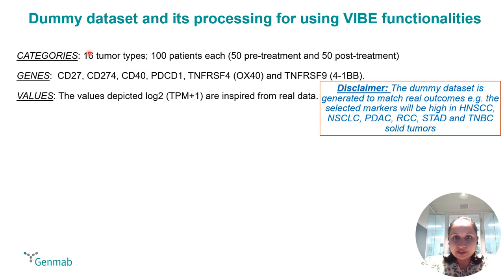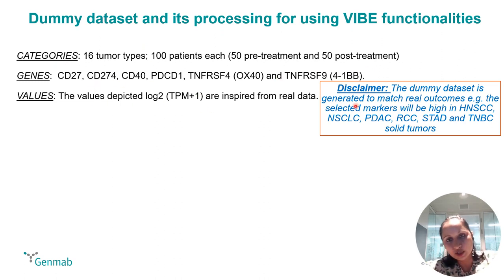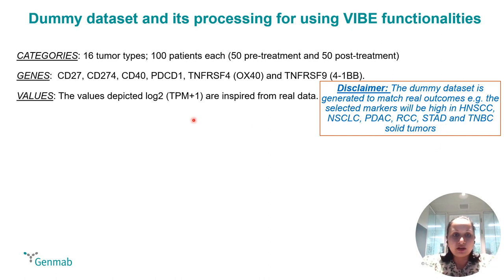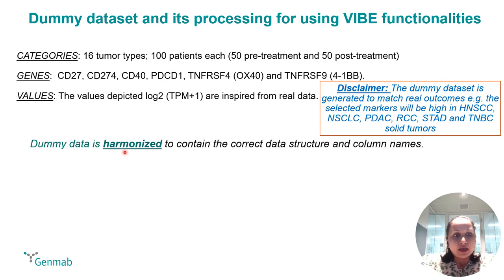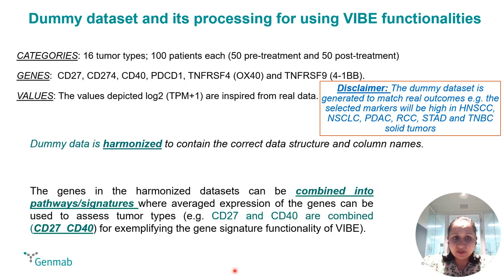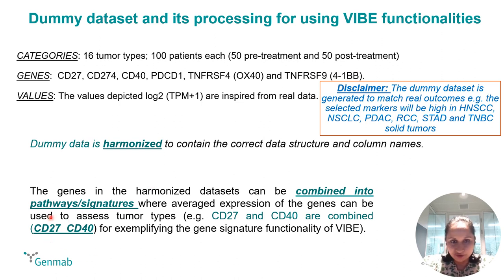First, I'll take you through the dummy dataset that we have for showcasing the bi-functionalities, where we have 16 tumor types, 100 patients each, with 50 pre- and post-treatment paired samples for six different genes, and the values depict log2 TPM inspired from real outcomes — meaning some of these solid tumors will have high expression of these genes. The dummy dataset has to be harmonized before using Y-functionality so that it contains the correct data structure and column names. Additionally, one can choose to have combined genes as gene signatures or pathways, and I'm going to use CD25 and CD40 as an example.